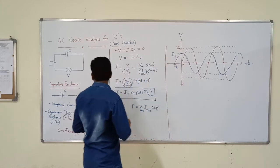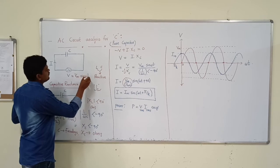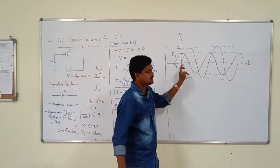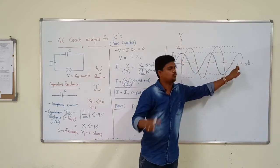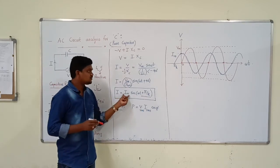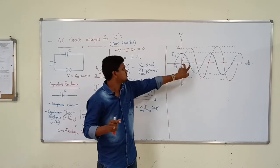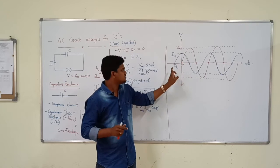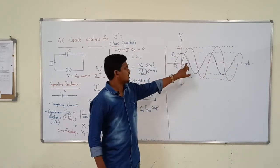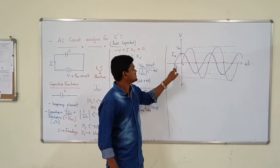Now we will write the phasor diagrams. Voltage is Vm sin omega t — starts from 0 and follows the sinusoidal path with time period 2 pi. But current equals Im sin omega t plus pi by 2, meaning plus 90. In the inductor case, the current waveform starts after 0 (lags). But in the case of capacitor, the current starts from pi by 2 — which comes directly from the equation with plus 90.